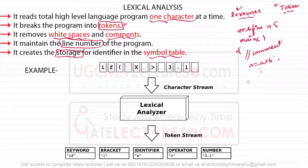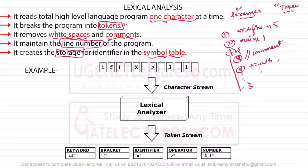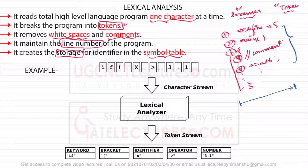There are line numbers associated with the program — for example, line number one, two, three, four, five, and so on. When we discuss the lexical analysis phase, this lexical analyzer is going to remove all the newline characters from the program. The compiler does not require newline characters, so if all newline characters are removed, the entire program will come within a single line.